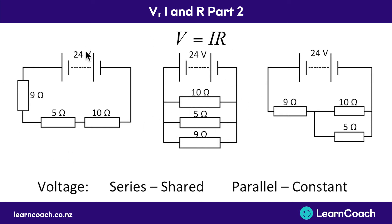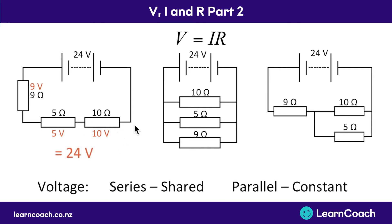In the series circuit we split up the 24 volts proportionally to how big the resistance is. So there might be 9 volts used on the 9 ohm resistor, 5 volts on the 5 ohm resistor, and 10 volts on the 10 ohm resistor. A 10 ohm resistance is twice as big as a 5 ohm, and therefore uses up twice as much voltage. There'll be 24 volts used in total as the current goes around the circuit, then the current gets back to the battery and collects another 24 volts.